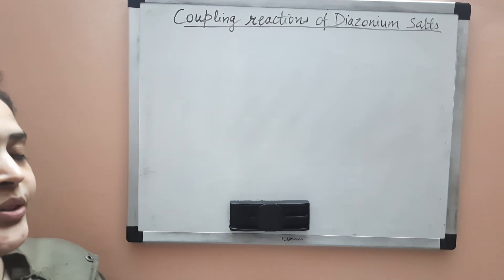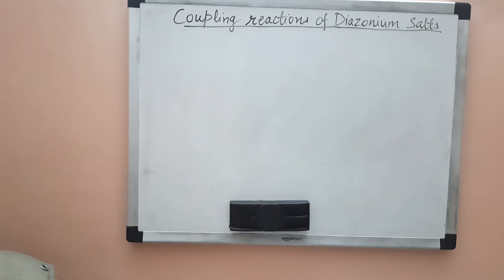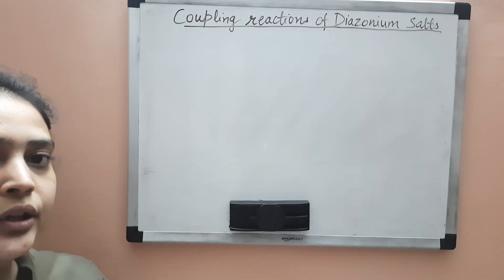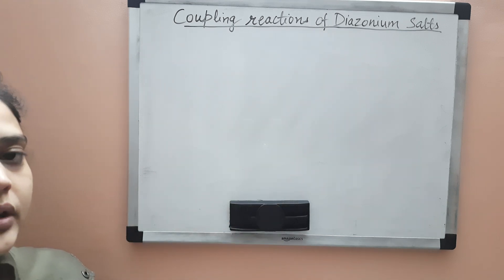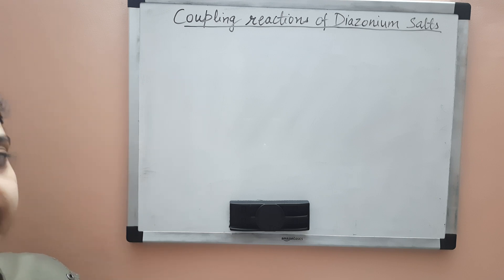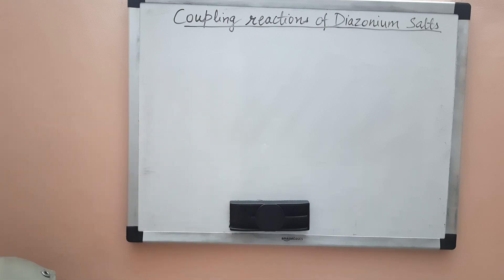Hello everyone, happy new year to all of you. Today we will be studying the last topic of the amines chapter — that is coupling reactions of diazonium salts. Coupling reactions occur with diazonium salt and another aromatic compound like phenol or aniline, and azo compounds are formed. Azo compounds have two aromatic rings joined by a conjugated system of N=N, and in this reaction the diazo group is retained.